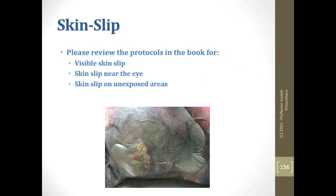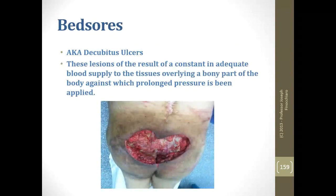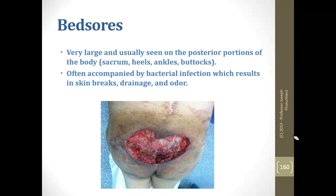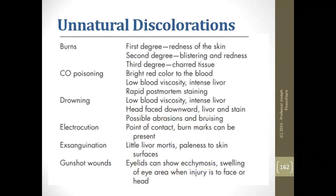If you've been through restorative art you should know the skin slip protocols fairly well. Bed sores — pressure ulcers — are one of the most difficult things you'll encounter. They are completely preventable with proper patient turning. They occur in pendulous areas that don't get much movement, are often accompanied by bacterial infection, result in skin breakdown and drainage, and the odor is probably second only to decomp. The protocol involves surface packs and wrapping in plastic. Table 20-2 is a great review chart — put it on a note card. Preservation is always your most important goal with any unnatural discoloration.